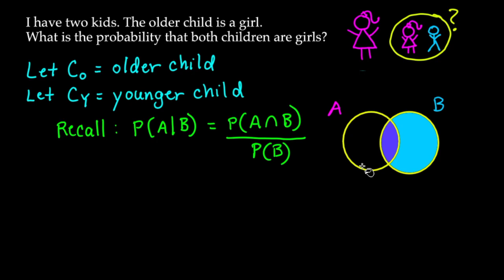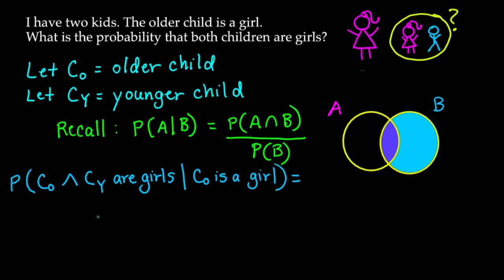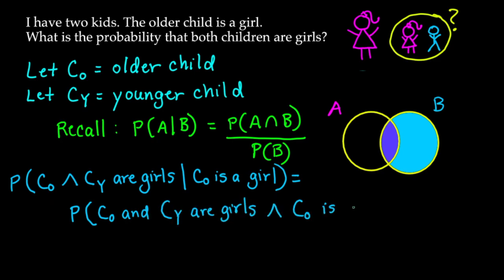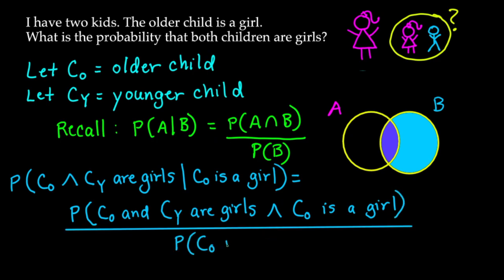What we care about is the intersection between set A and set B, the purple shaded region, divided by the entire blue shaded part which is set B. Writing problem one in set notation: P(C_O and C_Y are girls | C_O is a girl). Using the formula, the numerator is P(both children are girls) = 1/2 × 1/2, and the denominator is P(older child is a girl) = 1/2. So we get (1/2 × 1/2) / (1/2) = 1/2.